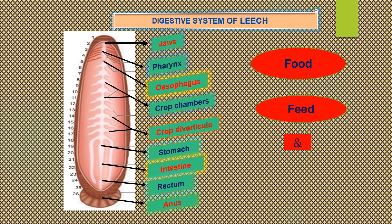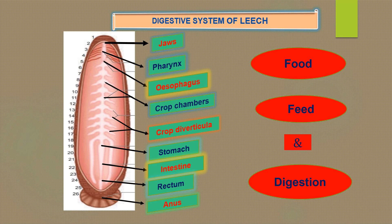Ingested blood is stored in the crop chambers and their diverticula. The blood passes from the crop into the stomach. Digestion takes place in the stomach by the action of proteolytic enzymes. The digested food is then absorbed slowly by the intestine. Undigested food is stored in the rectum and ejected through the anus. Leeches prevent blood clotting by the secretion of a protein called hirudine, and they also inject anesthetic substances that prevent the host from feeling their bite.